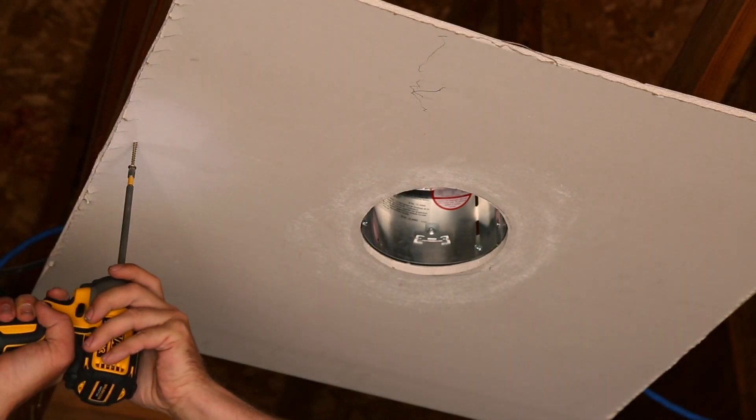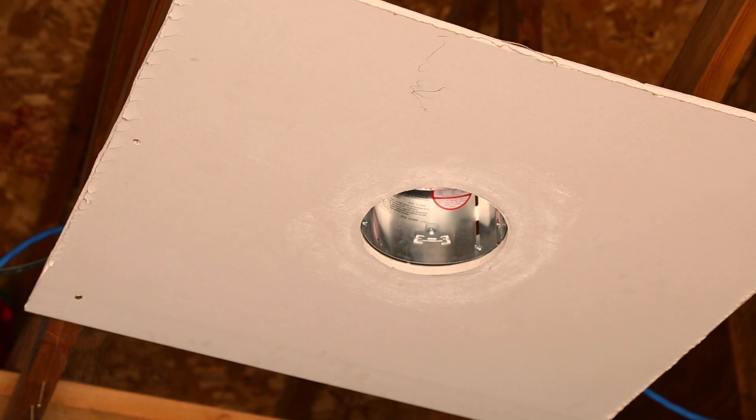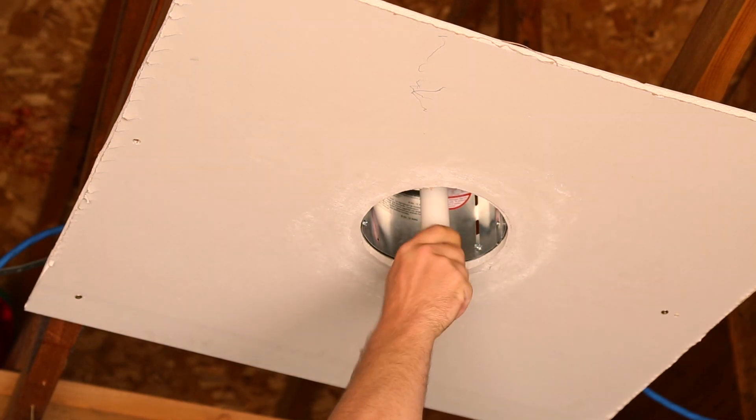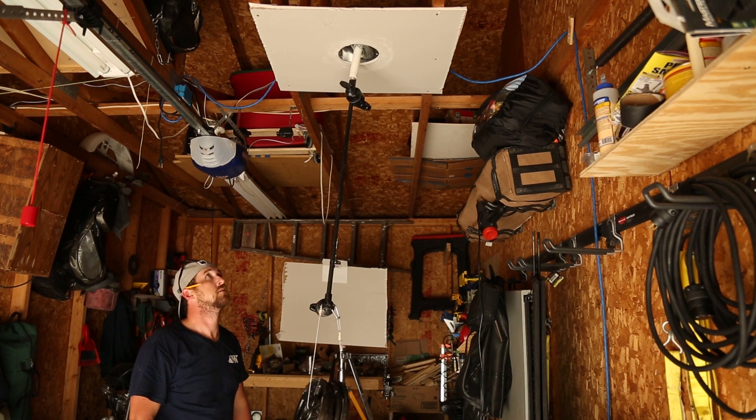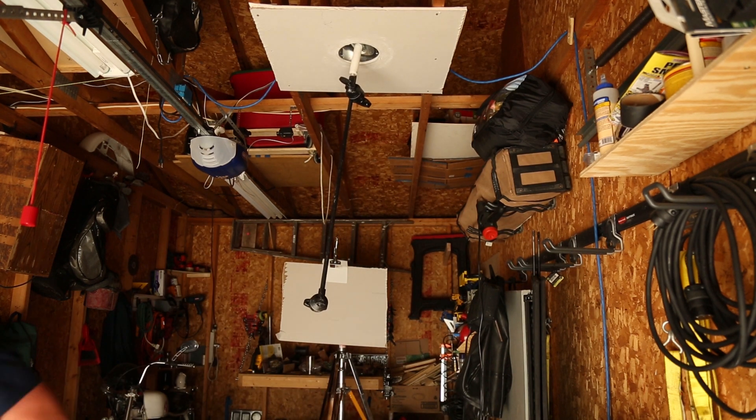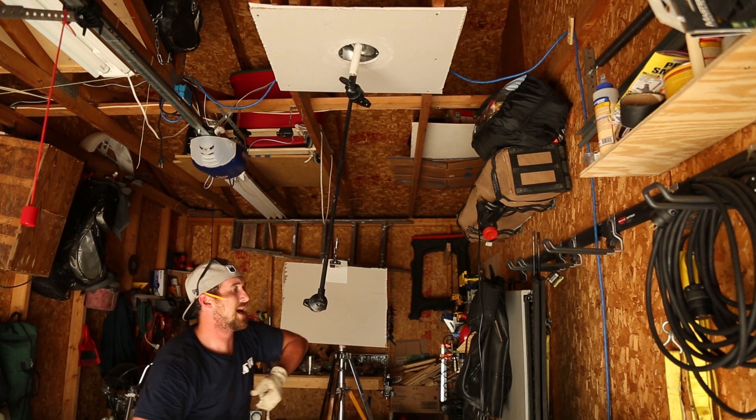So I rigged it up between the two joists, installed a piece of drywall just to get it as close to the real thing as possible, and then screwed in my adapter to the socket. And from there, I began doing my test again, adding two and a half pounds every single time until finally 45 pounds.